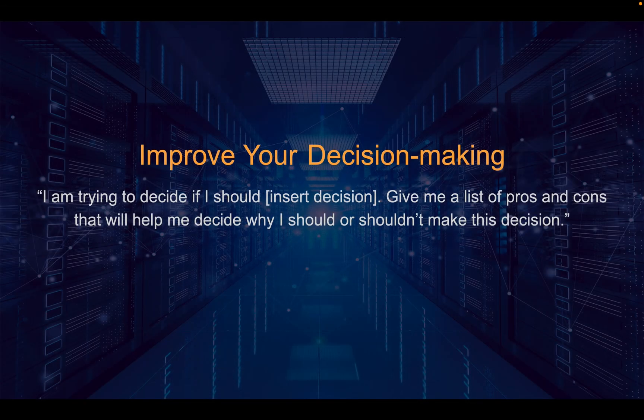The fifth: Improve your decision making. If you are in doubt about whether you should learn one thing over another, or just have a question where a decision is needed, you can type 'I'm trying to decide if I should [e.g., learn Python programming]. Give me a list of pros and cons that will help me decide why I should or shouldn't make this decision.' This can be used when deciding between two programming languages to get pros and cons on whether you should choose one over another. Let's see how this works.